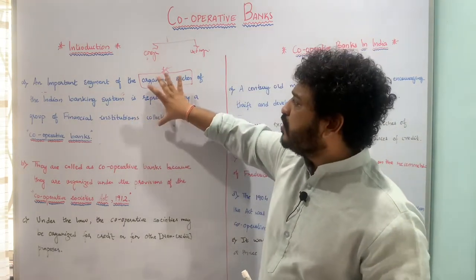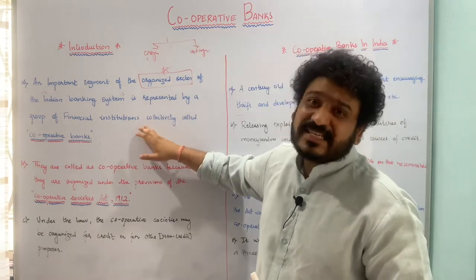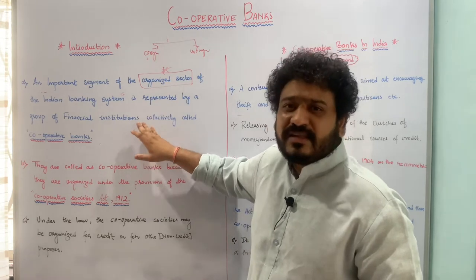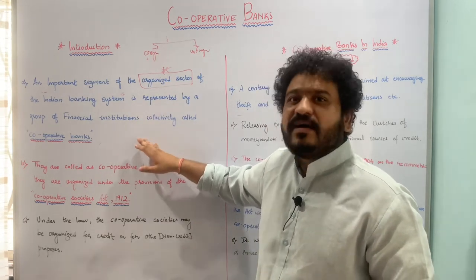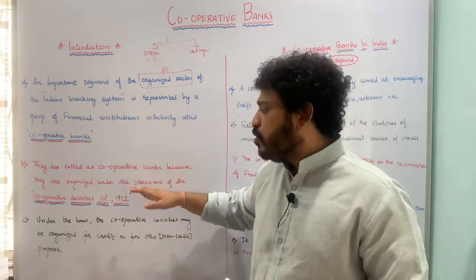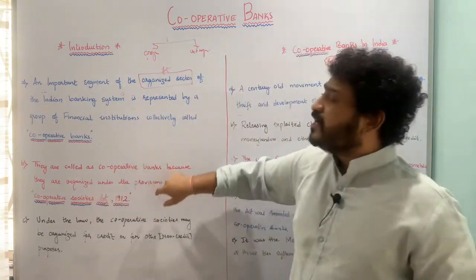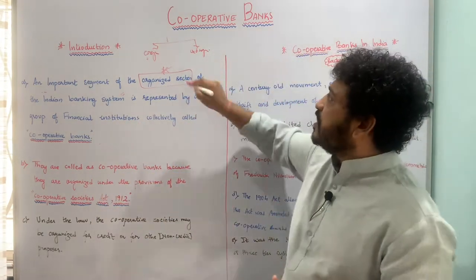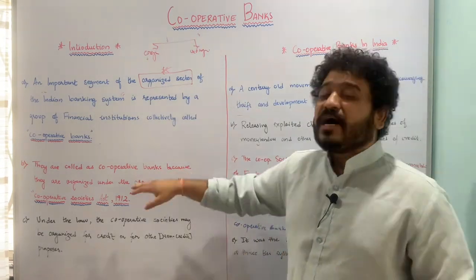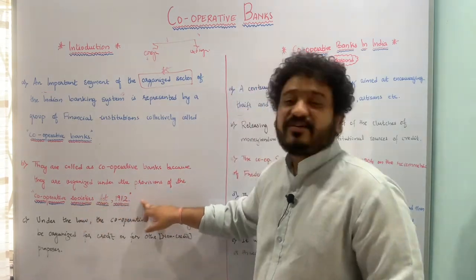Now since we know what cooperative banks in India are, let us look at where they stemmed from, because that is important. They have not come into being from regular banking laws. They have stemmed out from something called as the Cooperative Societies Act, and therefore they are called cooperative — because cooperation is an important word here.